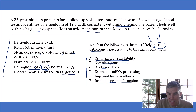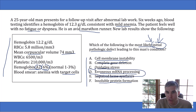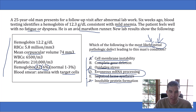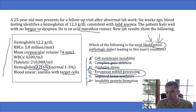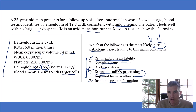Now looking at answer choice D — erroneous mRNA processing — it turns out this is the correct answer. Many of the mutations in beta thalassemia lead to erroneous mRNA processing. So answer choices A, C, and F are all incorrect because even though those things are happening in thalassemia, they are not the initial pathologic defect. The correct answer is D: erroneous mRNA processing.